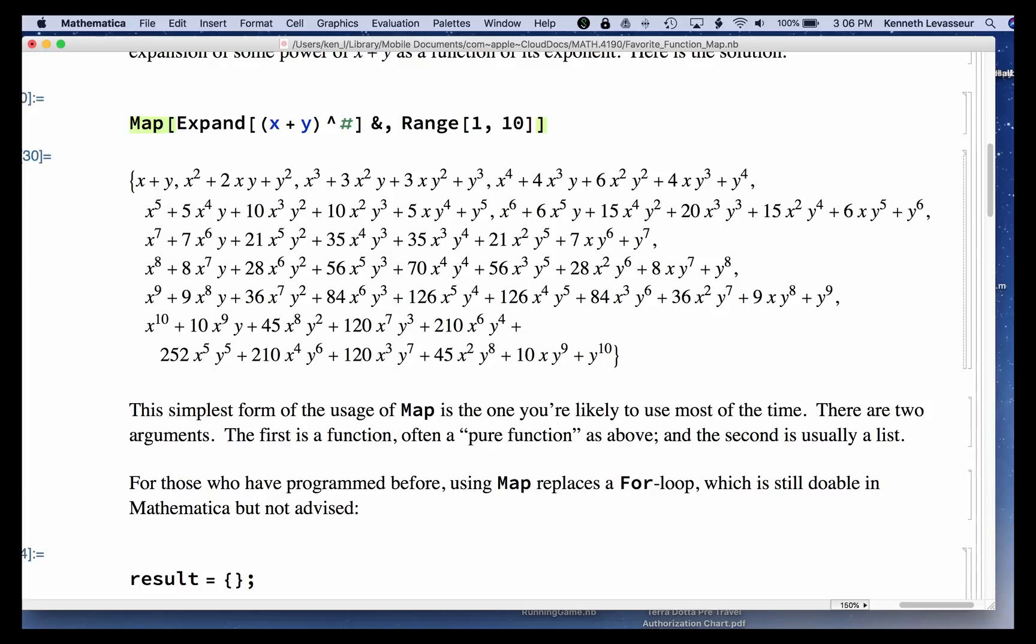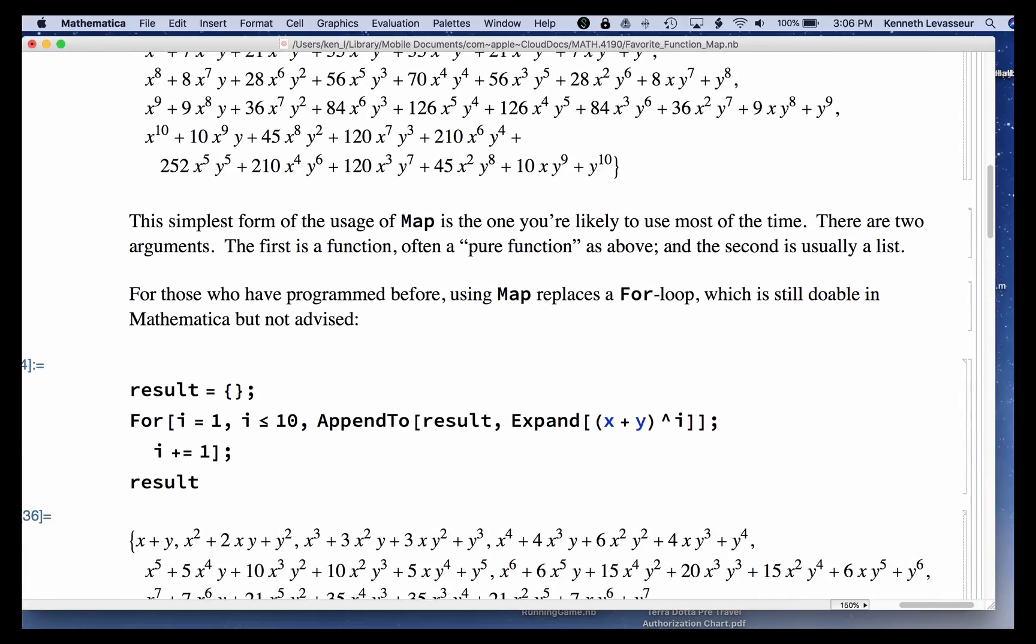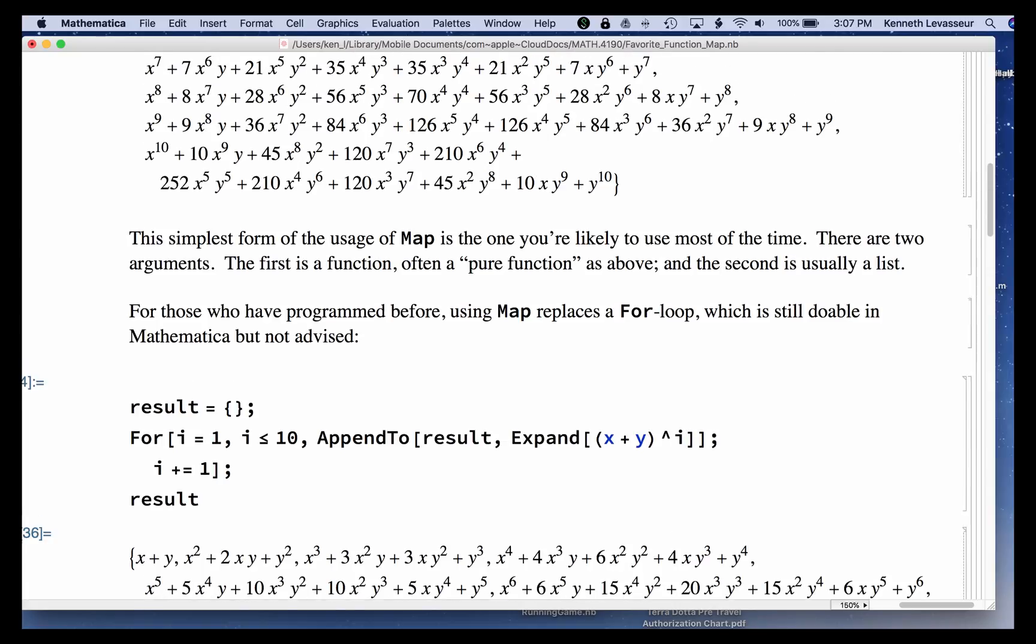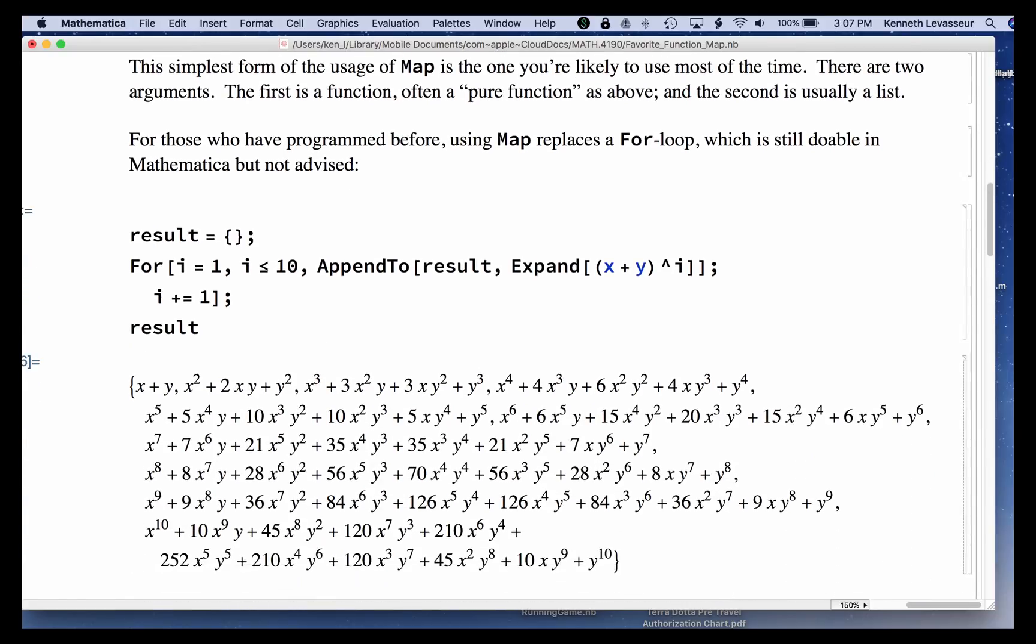If you've programmed before, you may have seen for loops. And you can get the same result using a for loop, which is what's referred to as part of procedural programming. And I just put this together. You don't really have to learn for. I never use it personally. But this bit of code, which could replace the Map expression, starts you out with an empty list and you step through the numbers 1 through 10, expanding x plus y to the power, and you append that result to the list. And then give the result. So it works, but much longer.